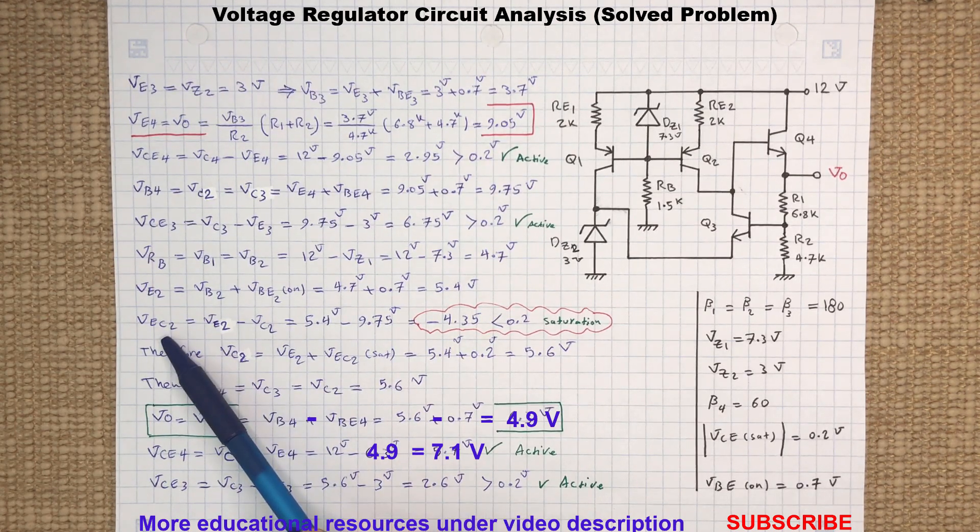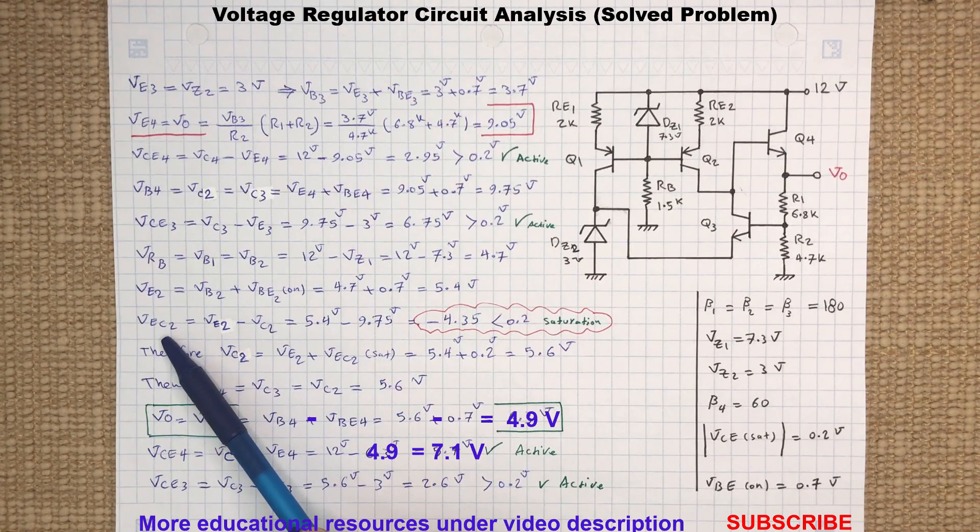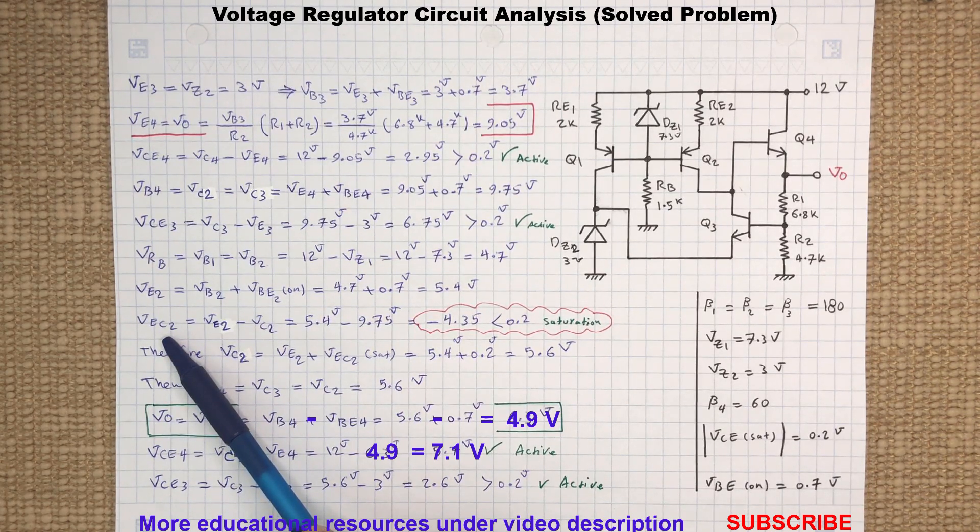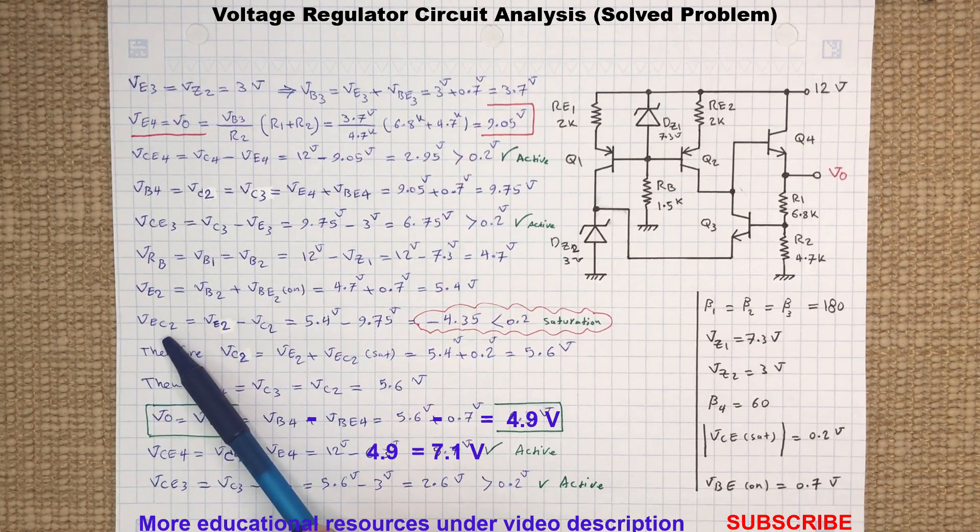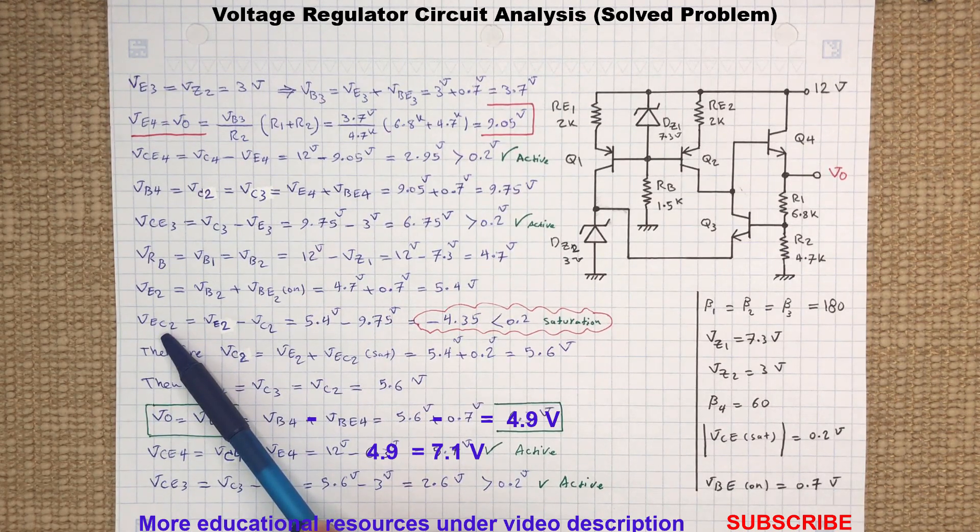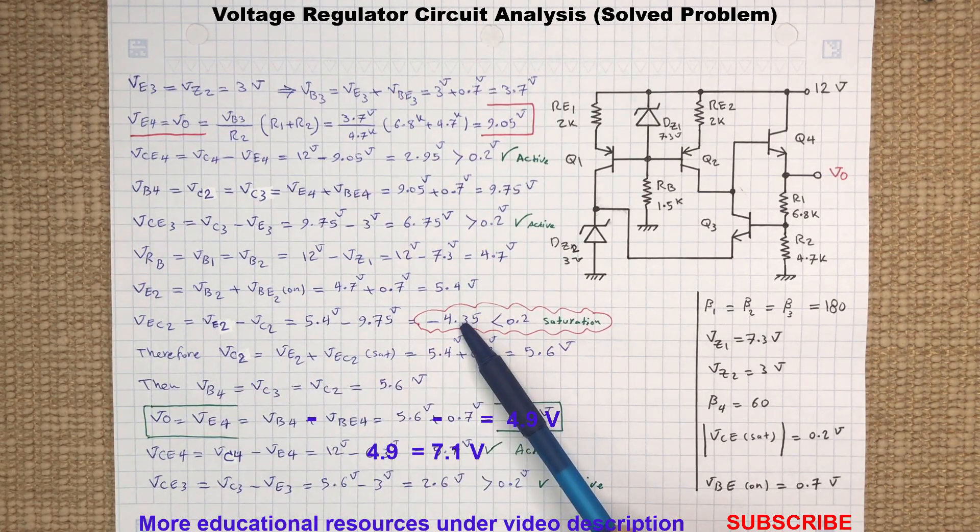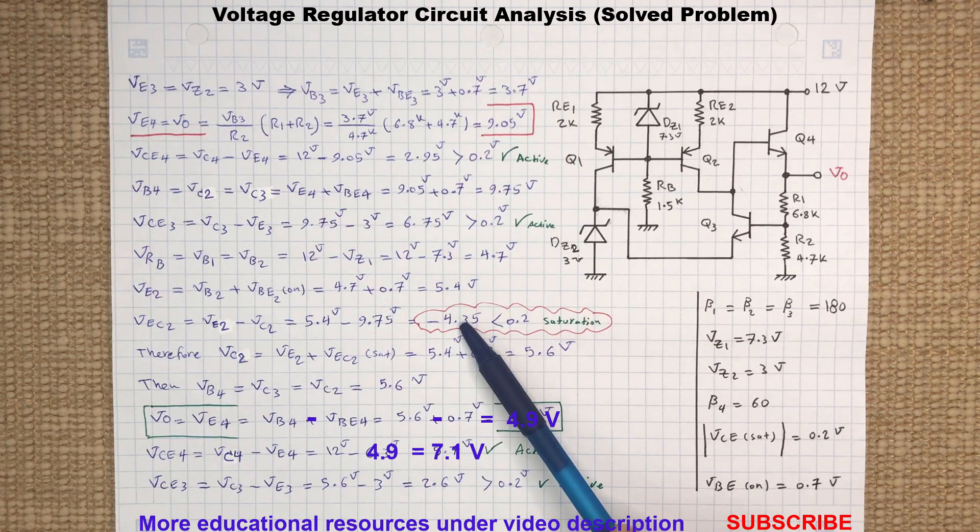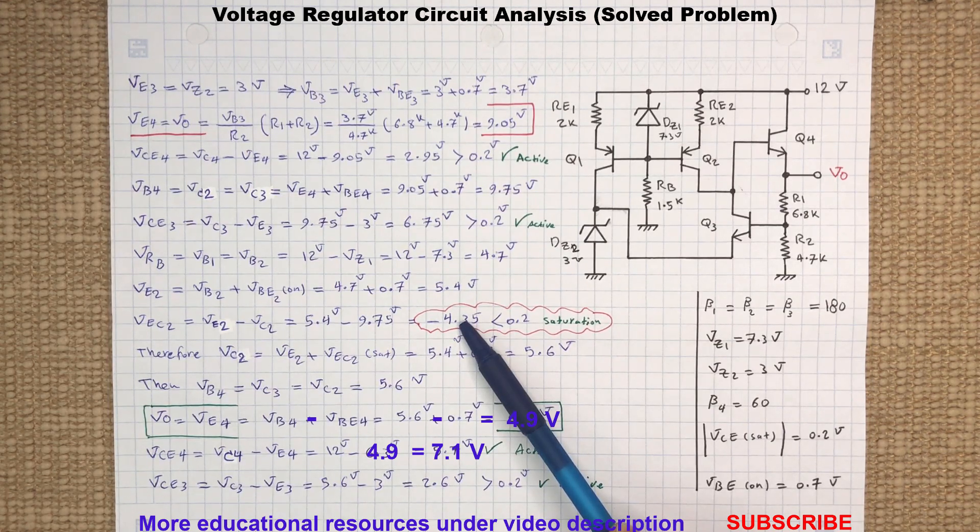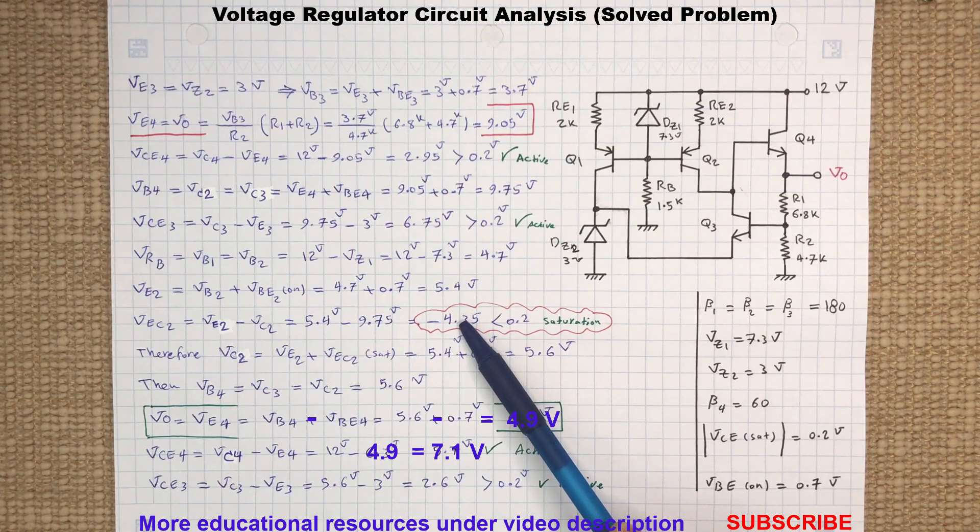The voltage at the collector of Q2 is already determined. So the emitter-collector voltage for Q2 will be 5.4 volts minus 9.75 volts, which results in minus 4.35 volts. And this tells us that the transistor Q2 is actually in saturation region because VEC of 4 is smaller than 0.2 volts.